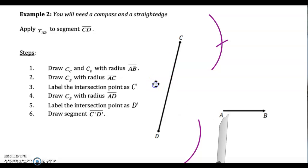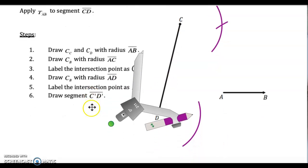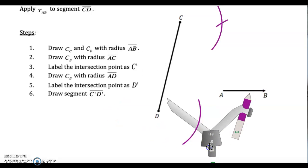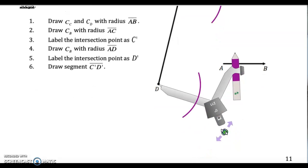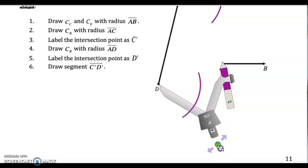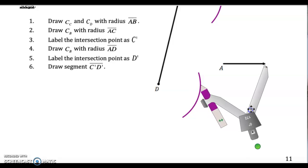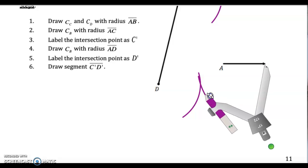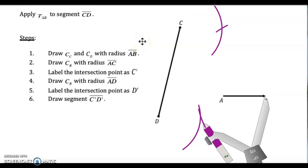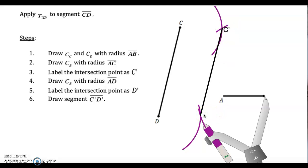Then I do the same thing. I measure from D to the beginning of the vector — you're measuring from the point you're trying to translate to the beginning of the vector, which is A. And then you put your compass on the end of the vector with that same radius. So I'm measuring from D to the beginning of the vector, then I move my compass to the end of the vector at B and mark it off. These are my two points — I'm going to connect them. This right here is going to be C prime, and this right here is going to be D prime. The directions are right there if you are trying to do it on your own.